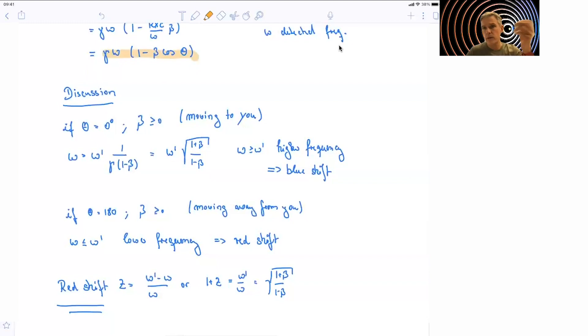And therefore, this term redshift is a measure of whether or not the source of light is moving towards us or away from us. And the larger the redshift, the higher the velocity is of this object moving away from us. So we can define this redshift as the relative change in frequency, omega prime minus omega over omega. Or we can define 1 plus z, 1 plus the redshift, as omega prime over omega, which is square root of (1 + beta) over (1 - beta).